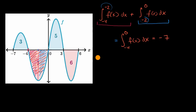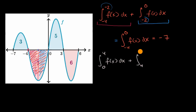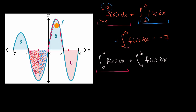Let's do another example. What is the value of the definite integral going from zero to four of f of x dx, plus the definite integral going from four to six of f of x dx? Pause the video and see if you can figure that out. This first part, going from zero to four, would be this area — the five shown on the graph.